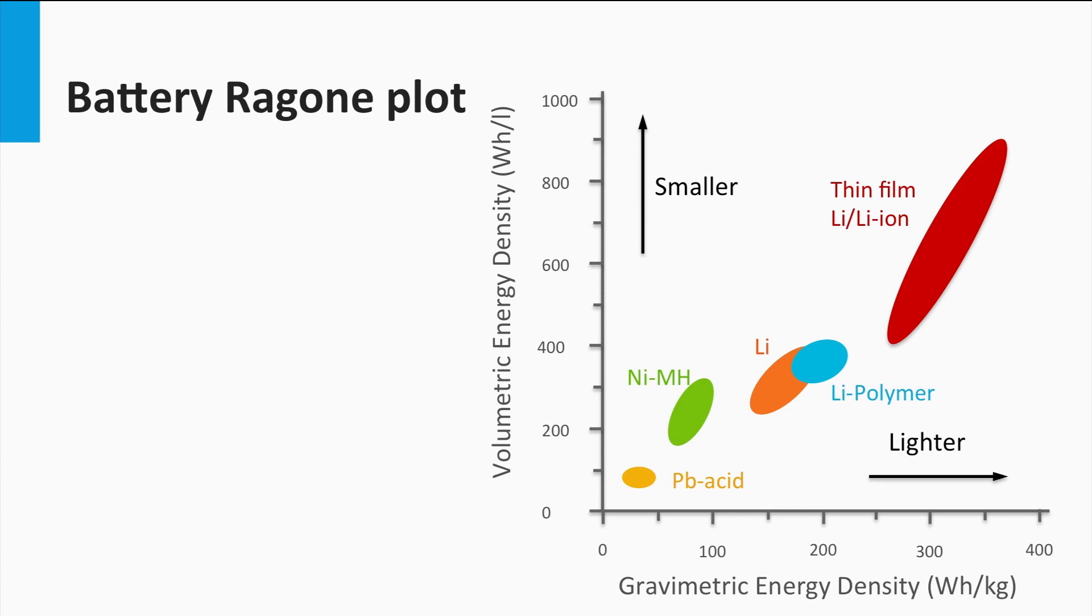Let's look at the Ragone plot specific to the typical batteries only. This is slightly different from the Ragone plot shown earlier, as this shows the comparison between the various battery technologies in terms of gravimetric energy density and volumetric energy density. Volumetric energy density is the amount of energy stored per volume of battery. The typical unit of measurement is Wh per liter. Higher the volumetric energy density, smaller the battery size. Gravimetric energy density is the amount of energy stored per mass of the battery. The typical unit of measurement is Wh per kilogram. Greater the gravimetric energy density, lighter the battery will be.